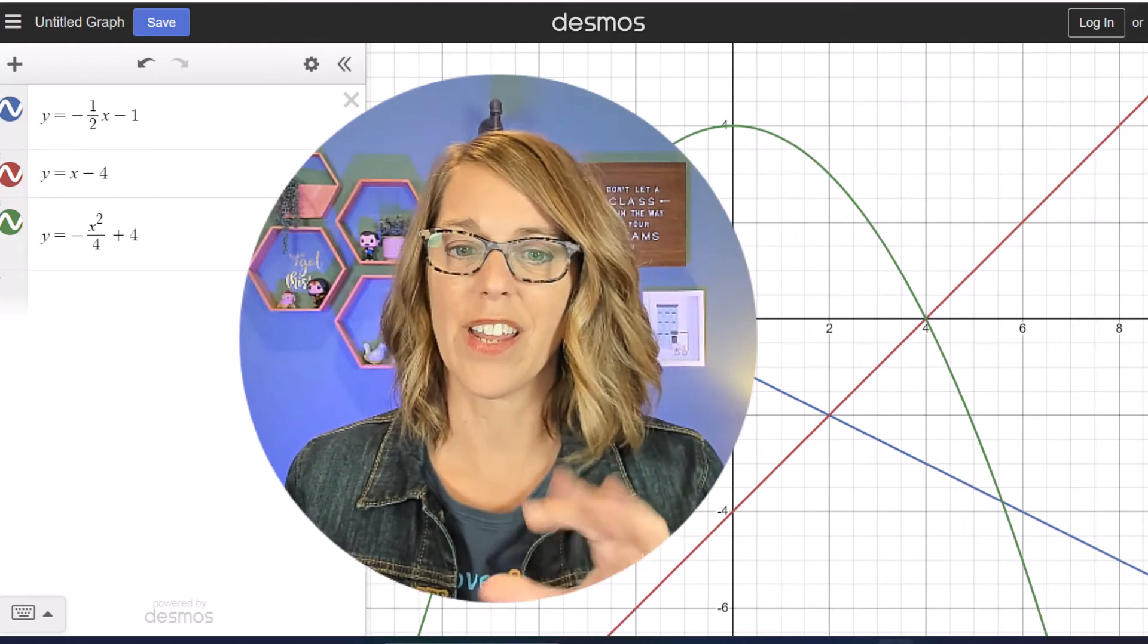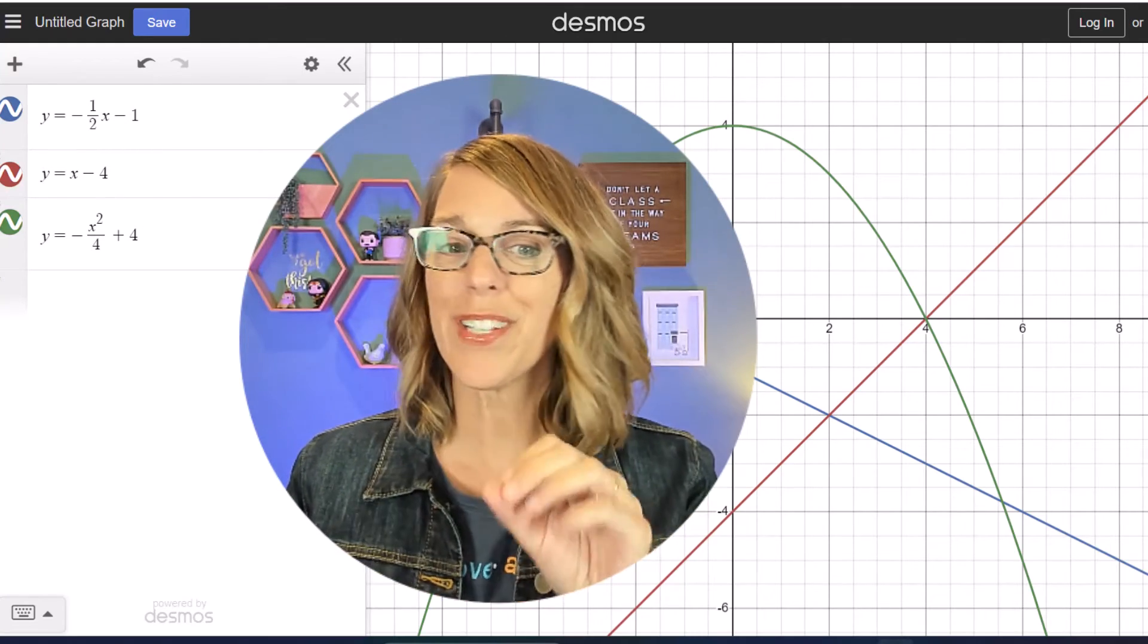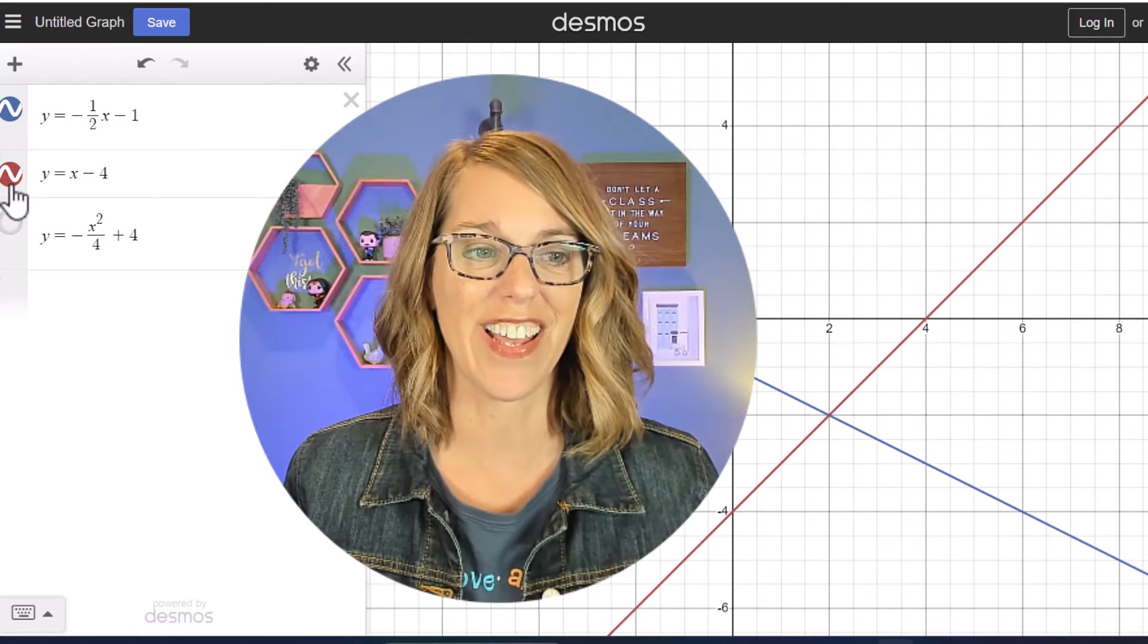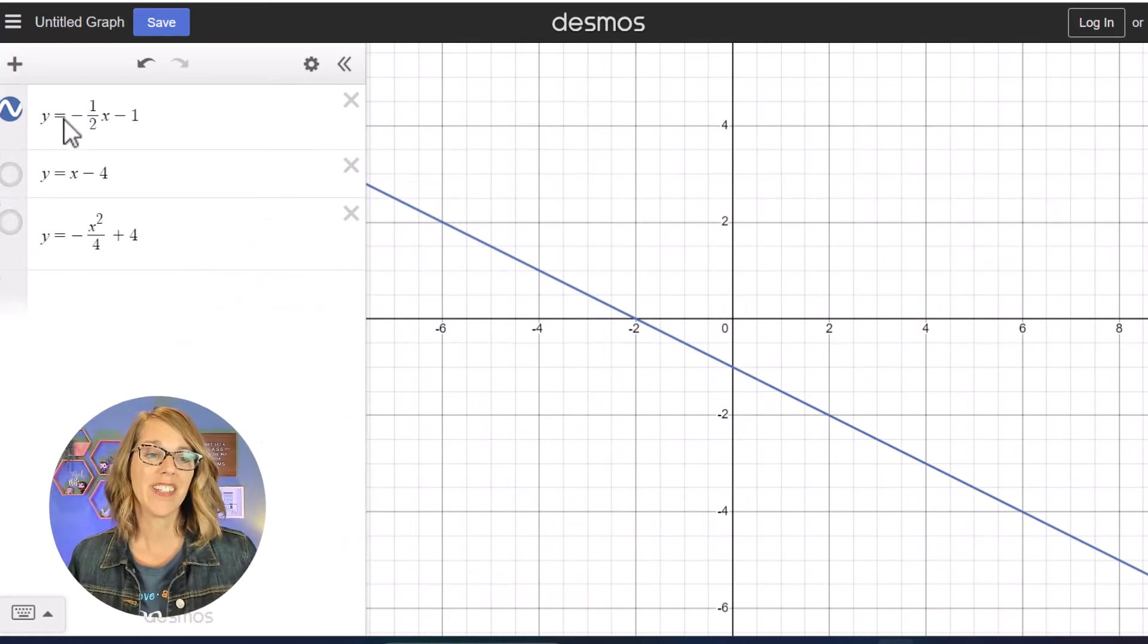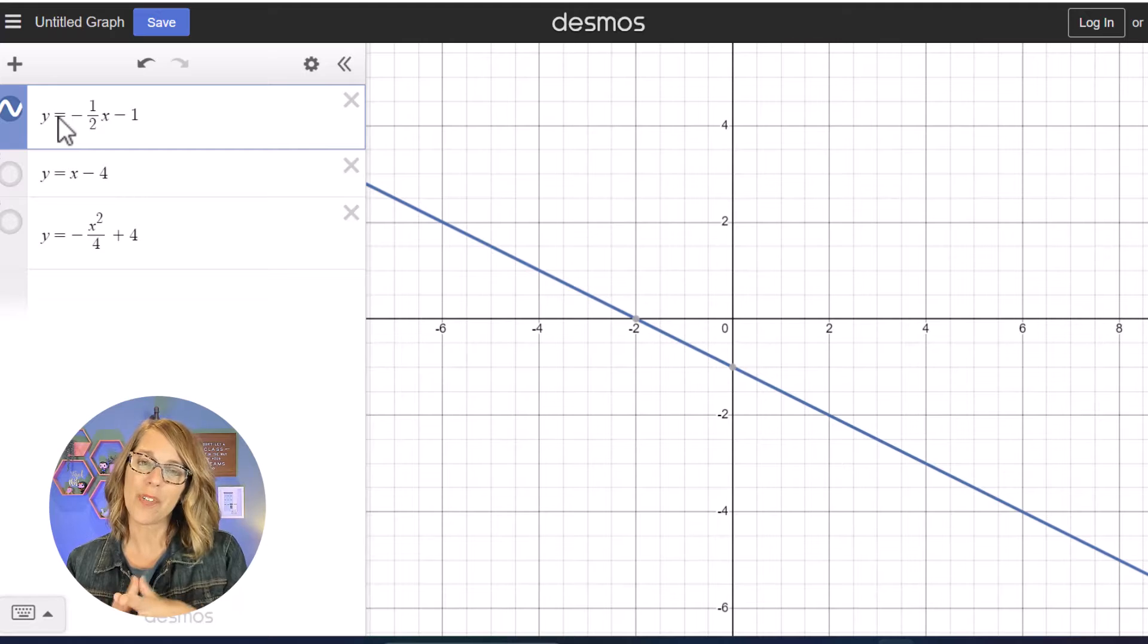Let's do some shading and coloring. I've got three different graphs here but I really want to start with just a line. So I'm gonna hide these other two. To start with a line, notice how I've got an equal sign there.